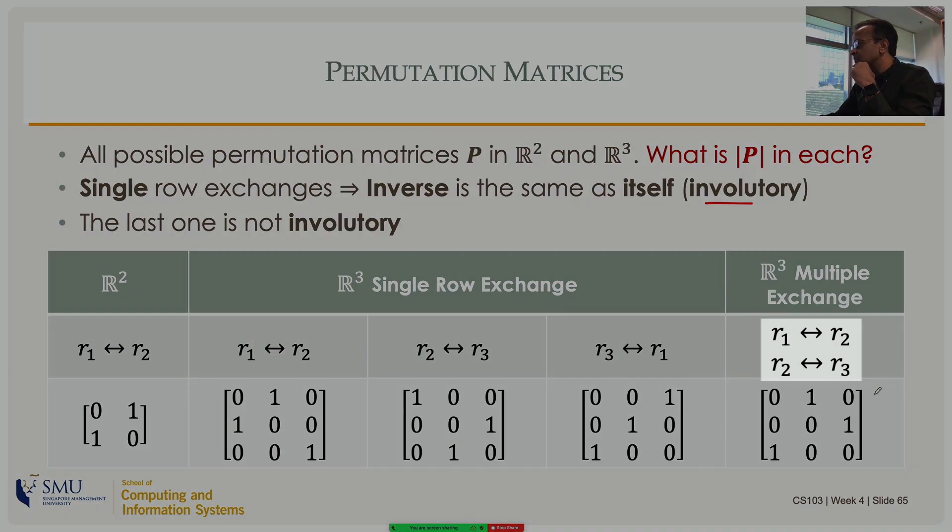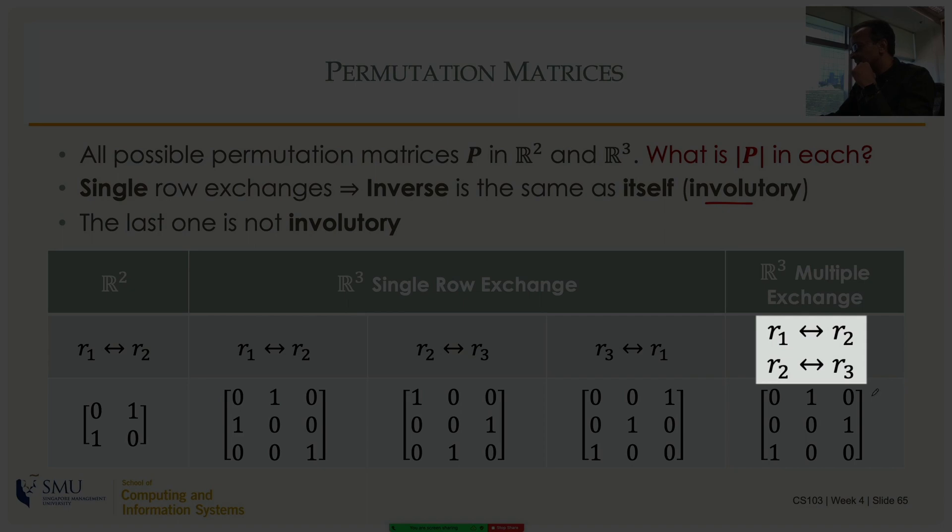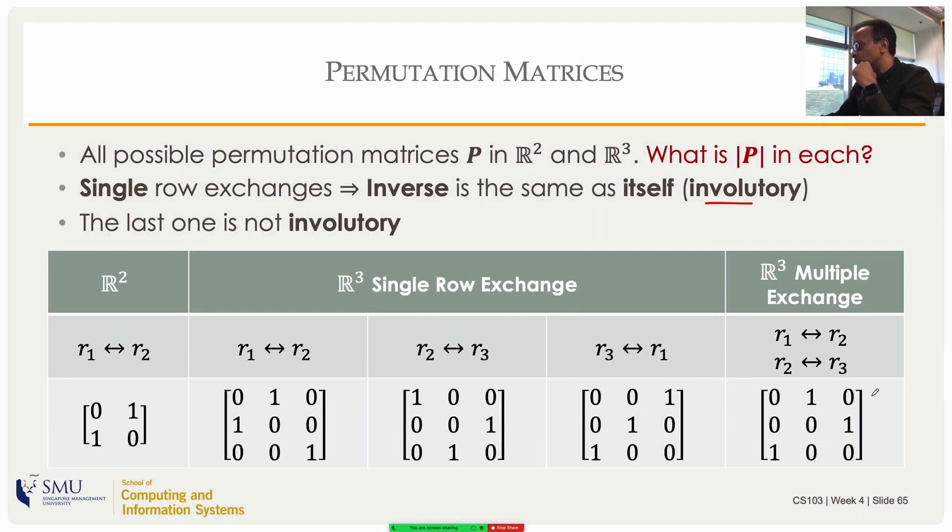But if you do multiple row exchanges, it is not involutory. If you do it twice, you don't get back to the original one. These single permutation matrices are the ones that you will consider in Gaussian elimination.